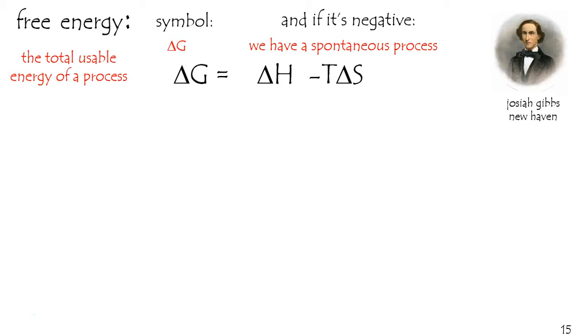The overall formula he came up with is that the free energy of a system is a function of its enthalpy, which is its heat at constant pressure, subtracting out the entropy of the system multiplied by its Kelvin temperature.